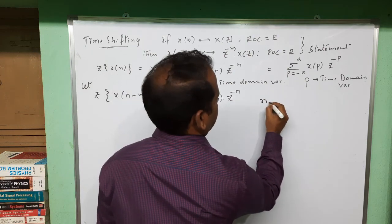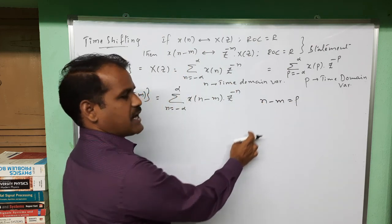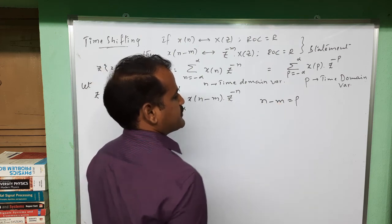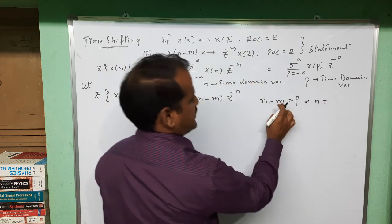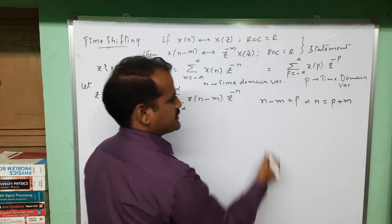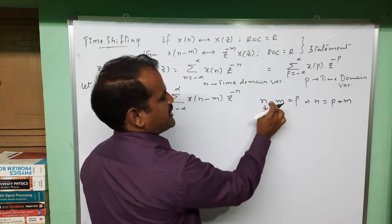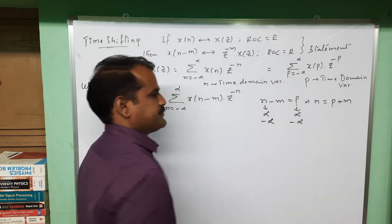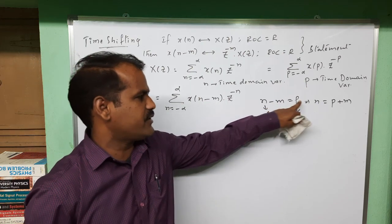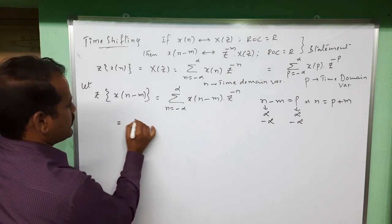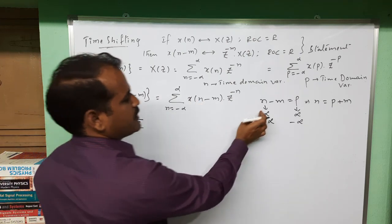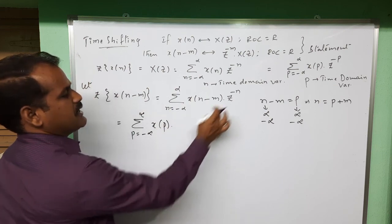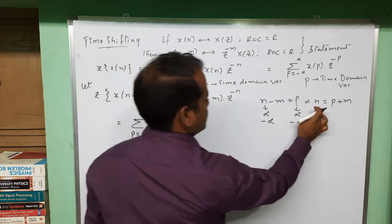Here p is a new time domain variable. Note that m is a constant — a shifting constant indicating the shifting of the signal. So n can be written as p plus m. If n goes to infinity, p also goes to infinity, and if n is minus infinity, p is also minus infinity. So the limits do not change: p runs from minus infinity to plus infinity, and we replace n-m with p and n with p plus m in z^(-n).